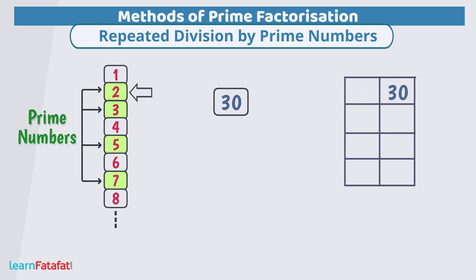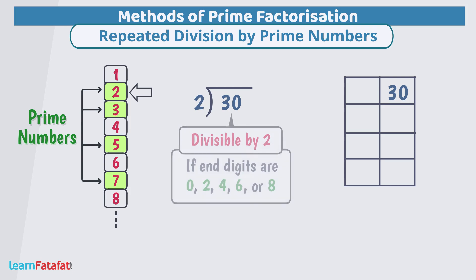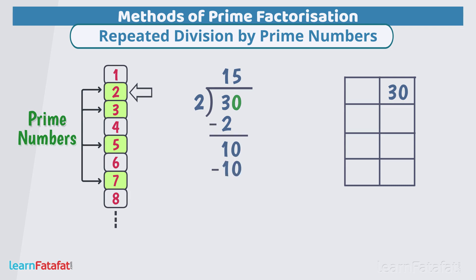Take smallest prime number that is 2 and check if given number is divisible by it completely. Here test for divisibilities will be very useful. Since this number has 0 at units place, so it is exactly divisible by 2. Let's divide it. The quotient is 15.